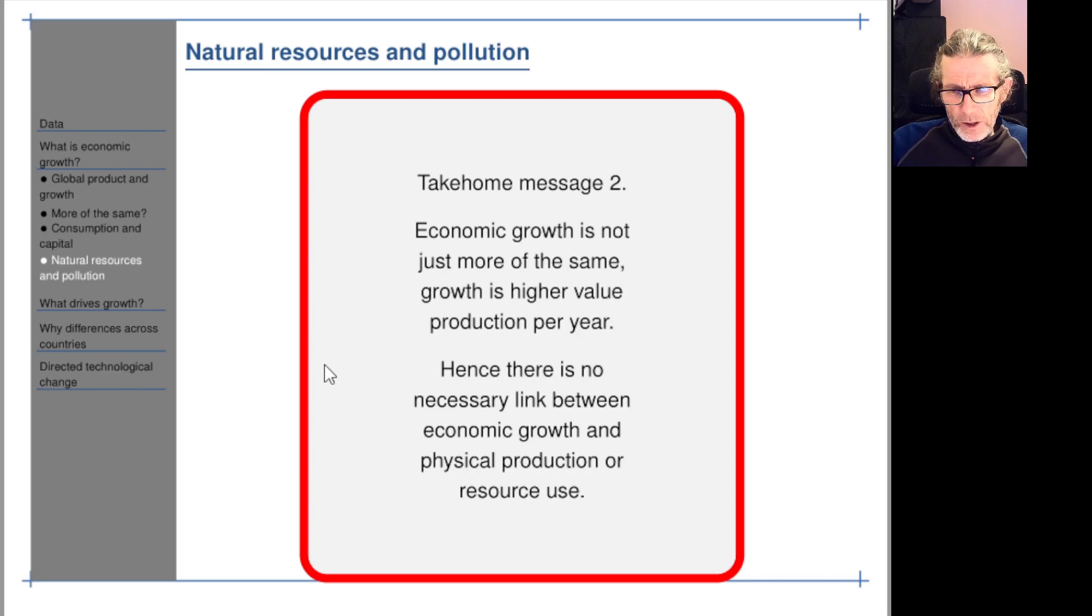But I should have shown you the data on that, I guess it's coming. There's no necessary link between economic growth and physical production or resource use, but when we look at the historical data we do see that they tend to follow each other. So as the global economy has grown, resource extraction and primary energy use and so on have tended to grow at the same rate. So even though there's no necessary link between growth and production and resource use, historically more or less up to now they do seem to have been linked, well they have been linked. And why that is and what we can do about it is one of the things we'll talk about through the course.